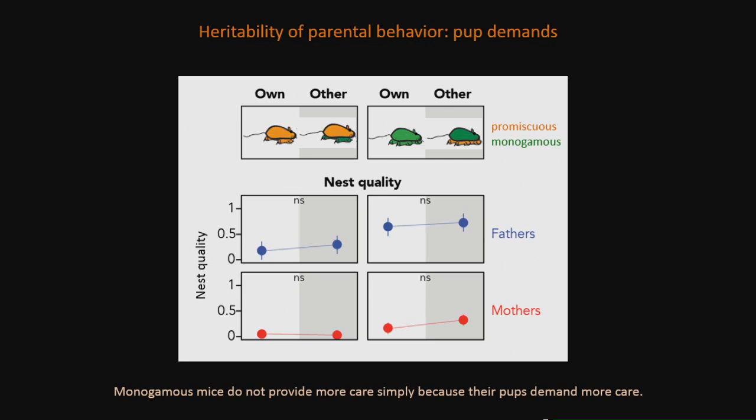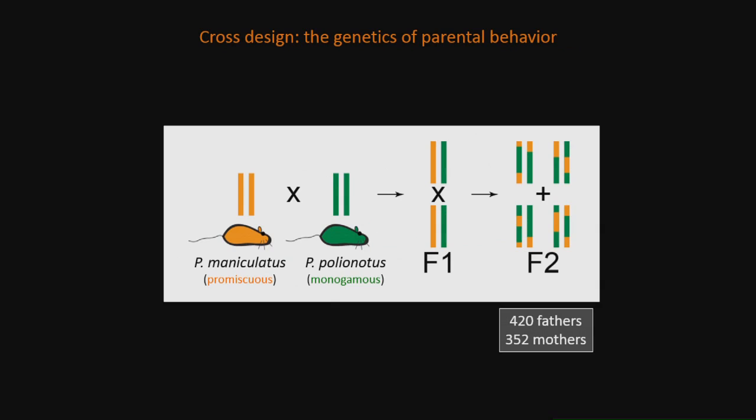Both results are consistent with the idea that these differences are heritable. That gave us enough confidence to take the next step and localize regions in the genome associated with these behavioral differences. We did a forward genetic cross where we took maniculatus, crossed them to polionotus, made F1 hybrids, intercrossed those F1 hybrids, and generated a large population of genetically heterogeneous F2s around 800. Those mice were then mated and assayed for their parental care in the F3 generation.